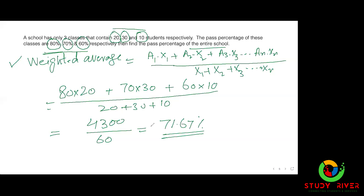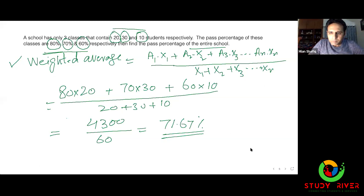اگر کوئی question مجھ سے پوچھنا ہے تو بتا دیں۔ یہ والا جو سوال ہے اسی طرح سے کرنا ہے — یہ آپ کا کہلاتا ہے weighted average۔ ان questions میں calculator allow نہیں ہوتا۔ (If you want to ask me any question, let me know. This type of question is solved this way — this is called weighted average. In these questions, a calculator is not allowed.)